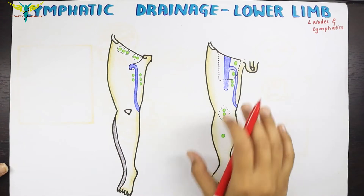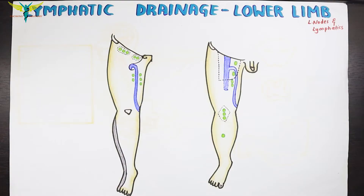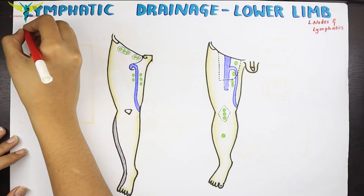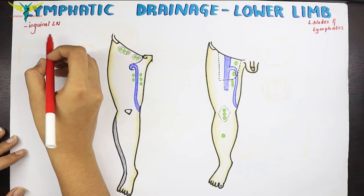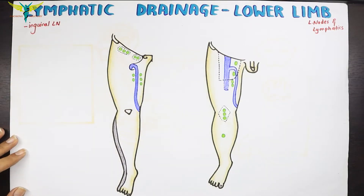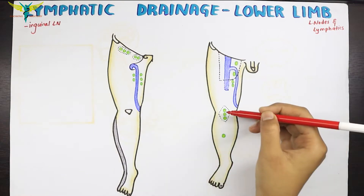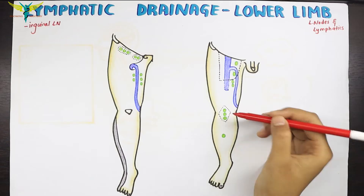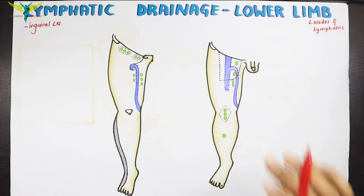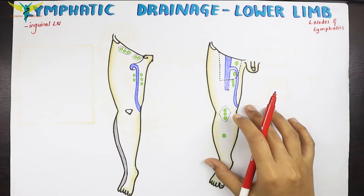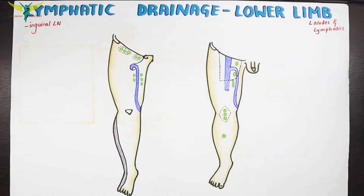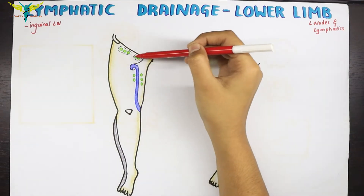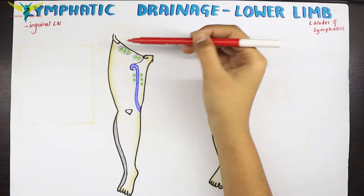Remember, most of the lymphatic drainage of the lower limb is drained into the inguinal lymph nodes. It can occur directly or indirectly through the popliteal and the anterior tibial nodes. In this diagram, this group is the deep inguinal lymph nodes group, and here lies the superficial inguinal lymph nodes.